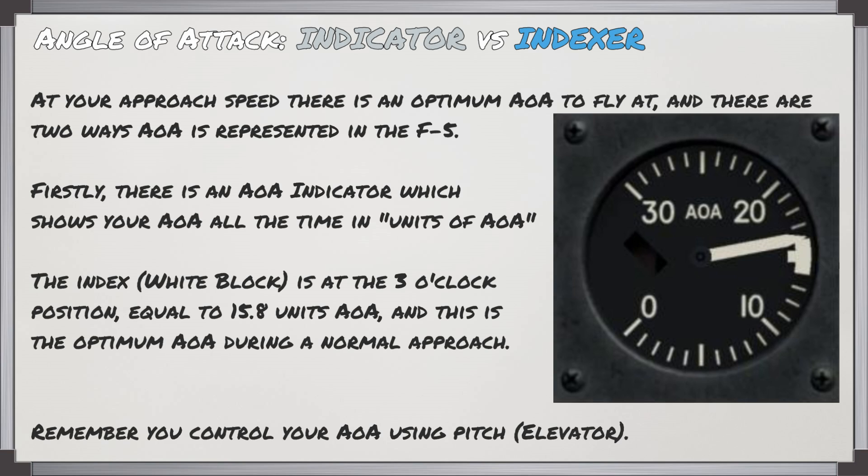At your final approach speed, there's an optimum angle of attack to fly at, and there are two ways that AOA is represented in the F-5. First, there's an AOA indicator which will show your AOA all the time in units of AOA with the needle. On the right-hand side at the 3 o'clock position, there's an index equal to 15.8 units — this is the optimum AOA during a normal approach. Remember that you're going to be controlling your angle of attack using your pitch.